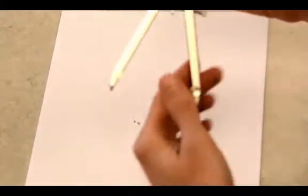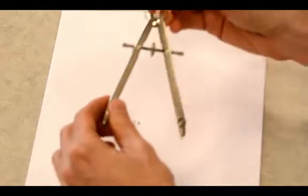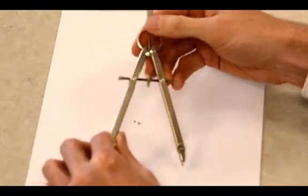And then, this is called a compass by the way, and this is an essential tool for construction. And there are different varieties of a compass. This one is a little bit fancier. As you can see, it's made of metal completely.